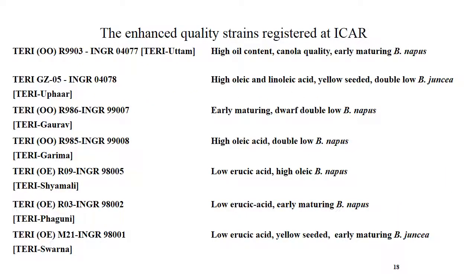Enhanced quality strains registered at ICAR include: Swarna — low erucic acid, yellow seeded, early maturing Brassica juncea, a 000 mustard. Falguni — low erucic acid, early maturing. Sharmali — low erucic acid, high oleic acid. Garima — low oleic acid, double low Brassica napus. Gaurav — early maturing, dwarf, double low Brassica napus. Upahar — high oleic and linoleic acid, yellow seeded, double low Brassica juncea, meaning Upahar is a triple zero mustard.